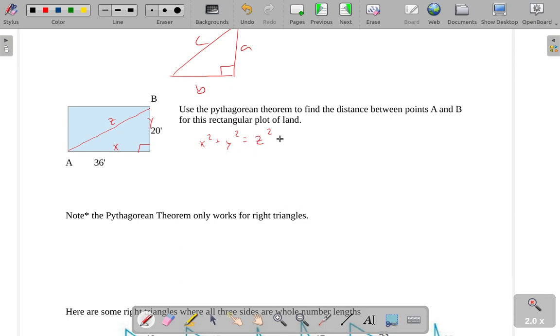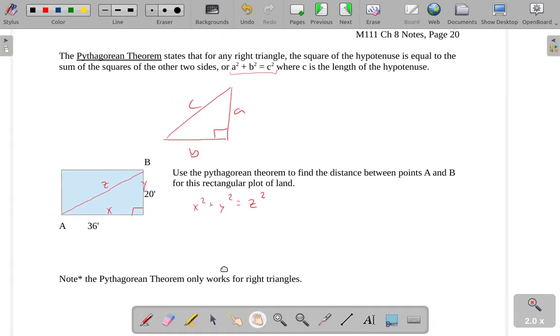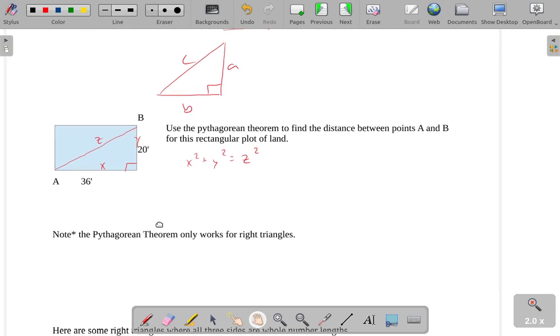Again, when we're doing the Pythagorean Theorem, the only part that's important is that whatever number is squared alone, not being added to anything else, is the length of the hypotenuse. And that's what I did here. Z squared is the one that's alone.